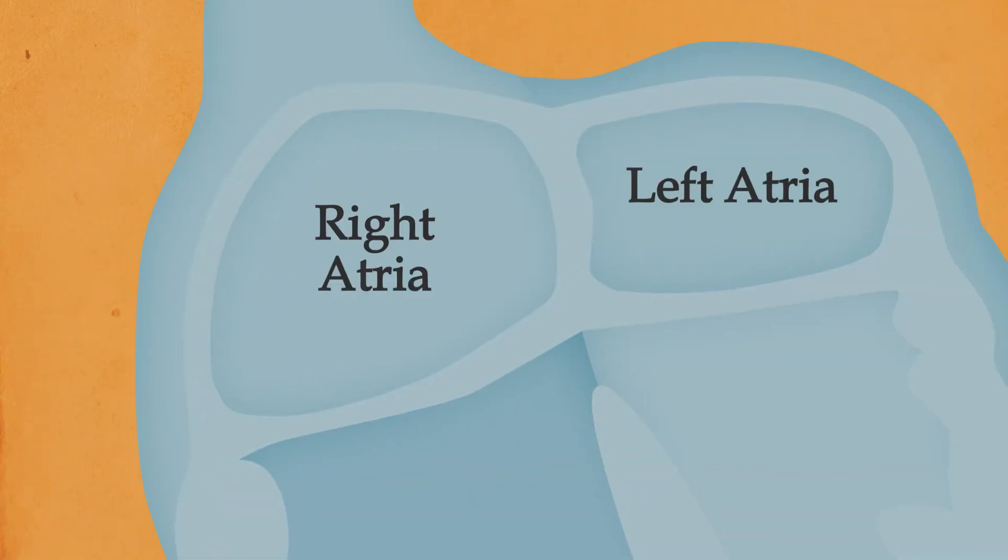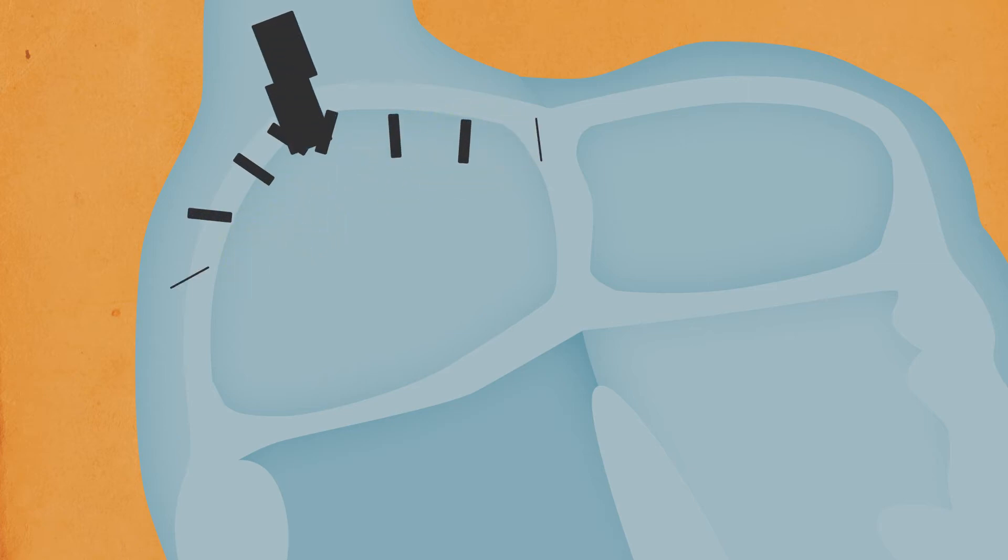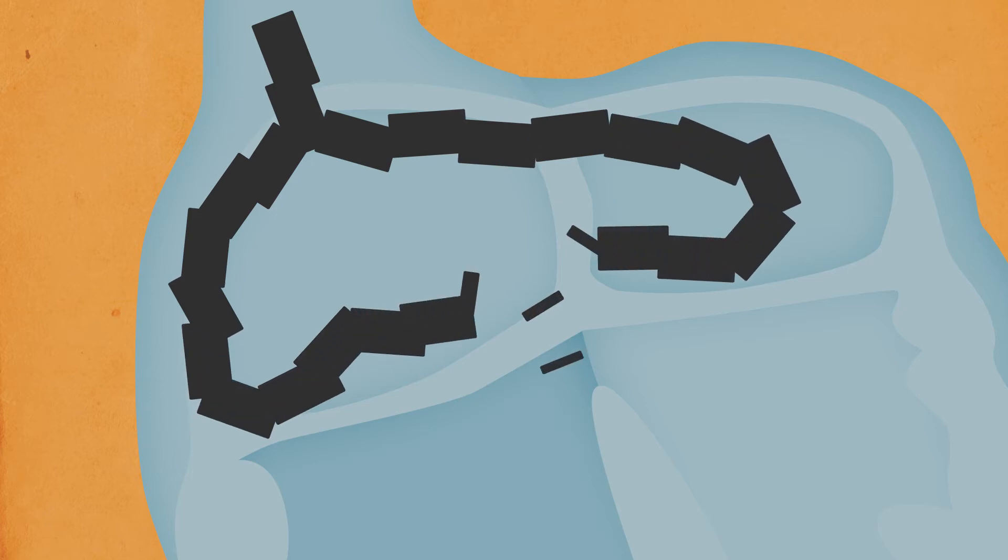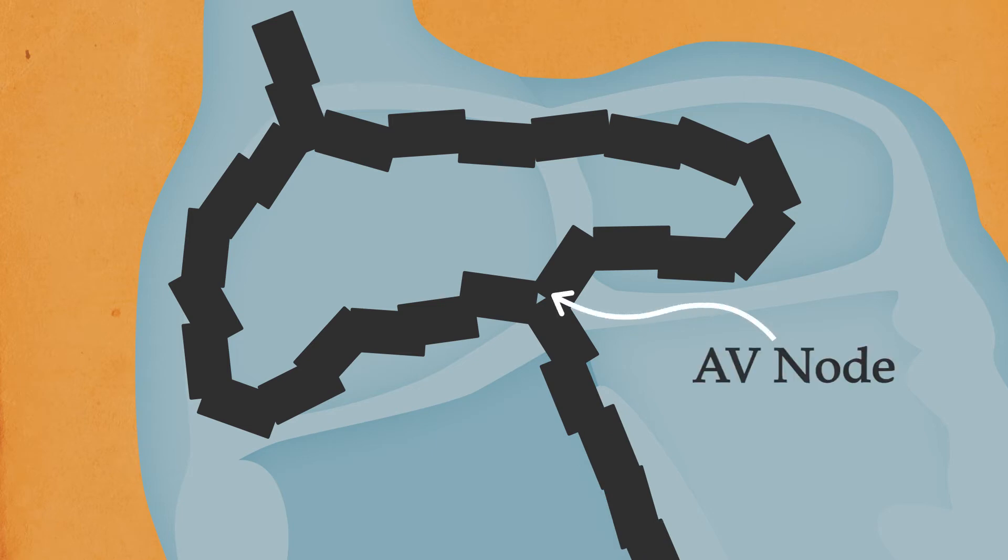But what about depolarizing the right and left atria? How do you explain that with dominoes? Remember how the action potential spreads to both atria at the same time? It's just like dominoes splitting into two separate paths. Now I see. Afterwards, the dominoes join into a single line again, similar to the action potential converging at the atrioventricular node.